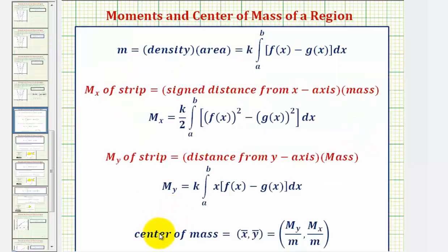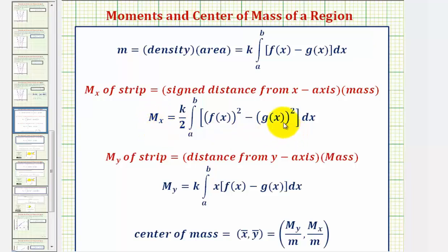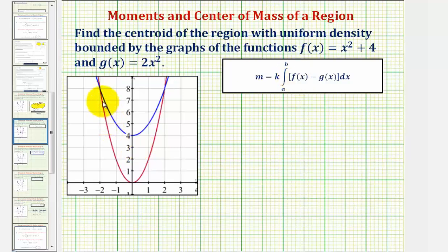In order to find the centroid or center of mass given by this formula, we'll begin by determining the total mass, which is equal to density times area. Because we have uniform density, we'll use the constant k for density. This integral gives us the area between two functions. Then we'll find the moment about the x-axis and the moment about the y-axis. Once we have this information, the centroid is given by the point (M_y/m, M_x/m).